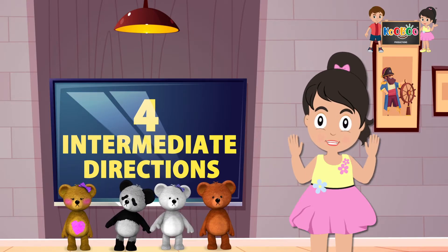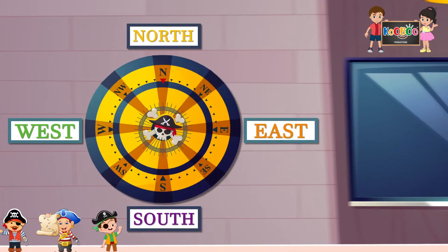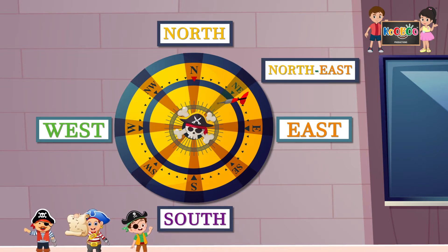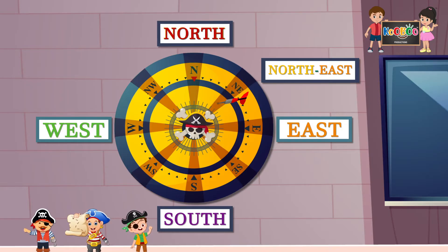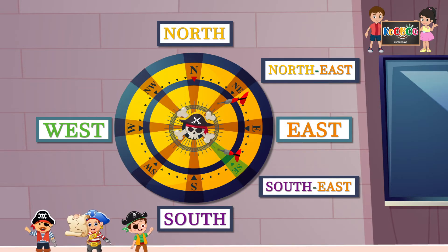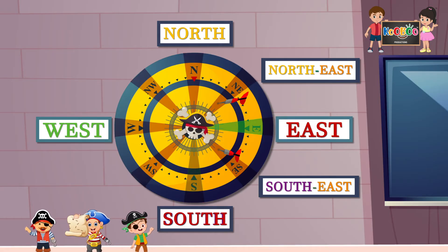Let's read them. Northeast, that comes between north and east. Southeast, that comes between south and east.